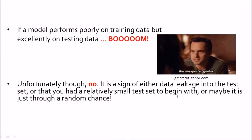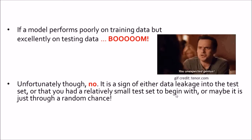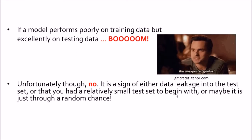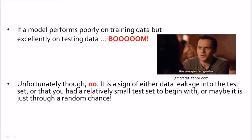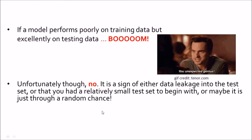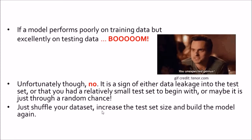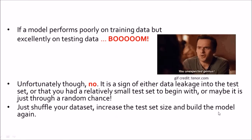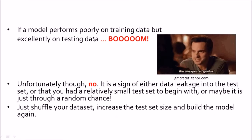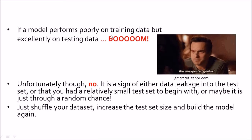For example, if you had 1,000 training samples and only 5 testing samples, on those 5 you can get all correct or all wrong — you cannot base your decisions on such a small testing set. Or maybe it is just random chance. The possible solutions are to shuffle your dataset, increase your test size, and build your model again.